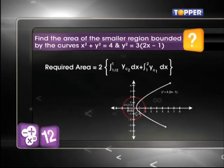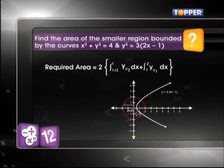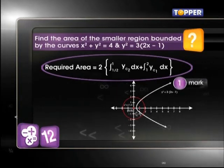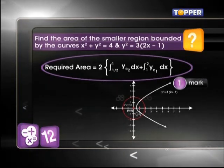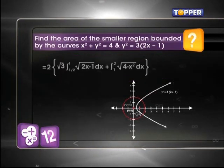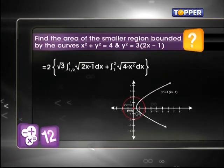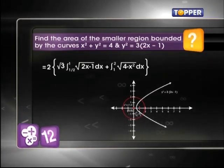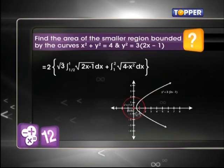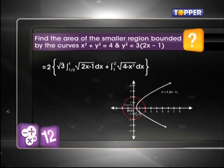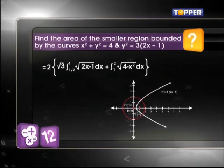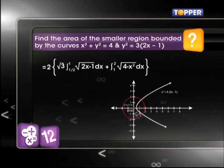Now, the required area is given by 2[∫yc2 dx from 1/2 to 1 + ∫yc1 dx from 1 to 2], which is equal to 2[√3 ∫√(2x-1) dx from x = 1/2 to x = 1 plus ∫√(4-x²) dx from 1 to 2].